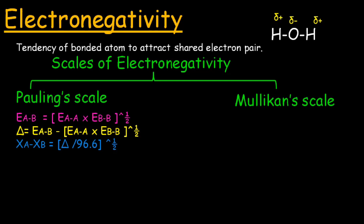If you know the bond energy of the reactants, you can find out the bond energy of the products. After finding the bond energy of the product, you can find out the difference between the electronegativity of two bonded atoms from the reaction of A and B to form product AB. E_AB is the bond energy of the product, which is related to the bond energies of the reactants. Taking the product and then the square root, you can find the bond energy of product AB.